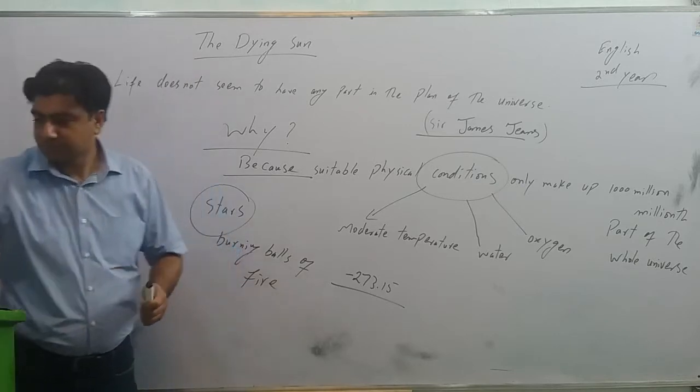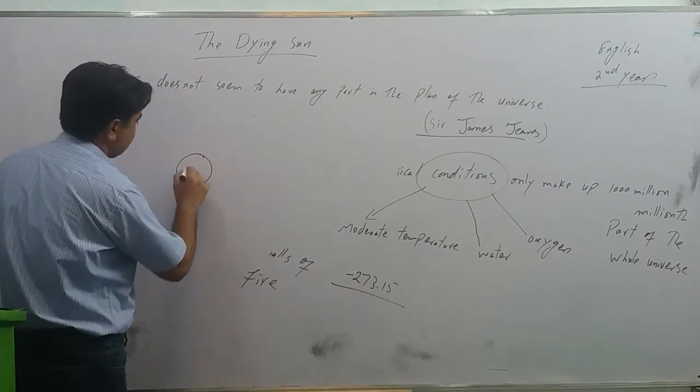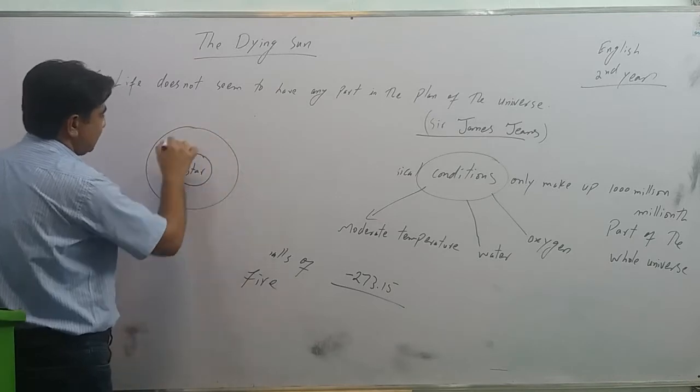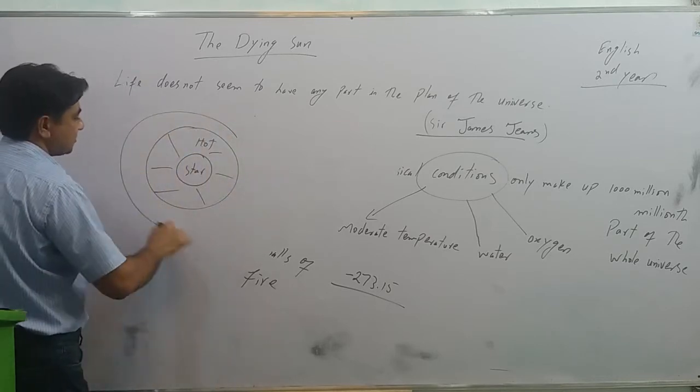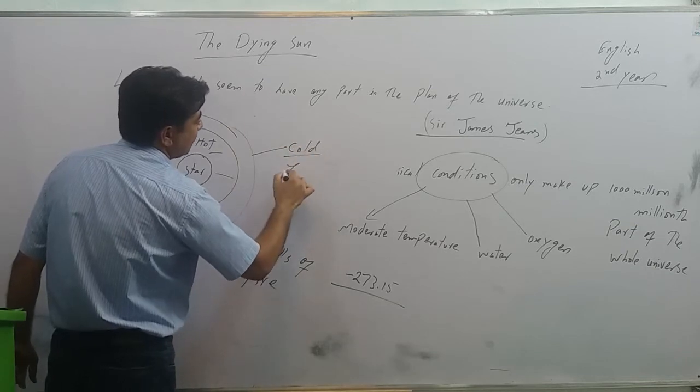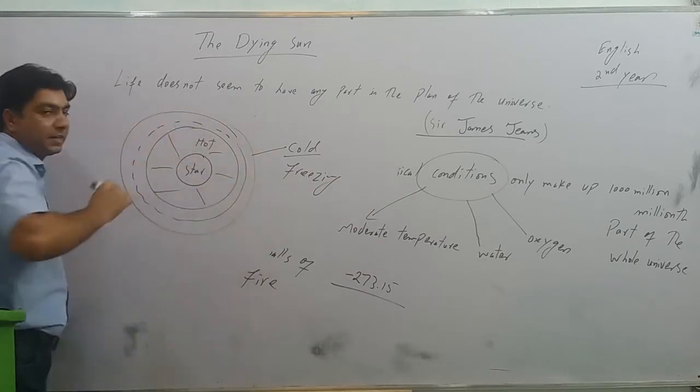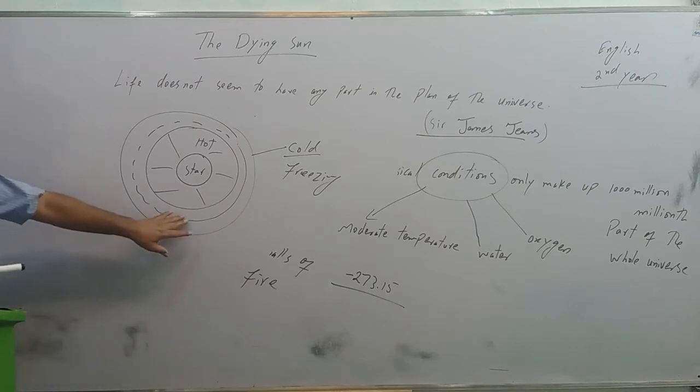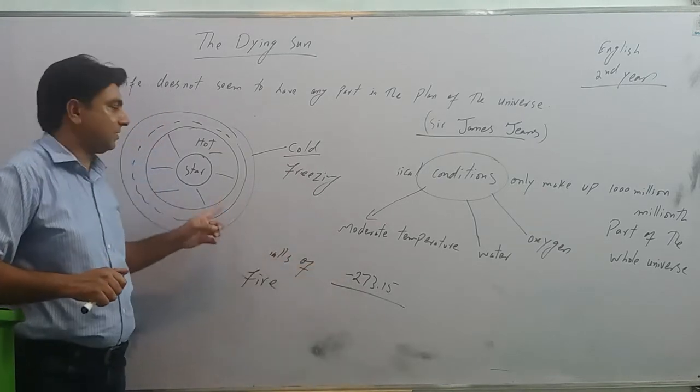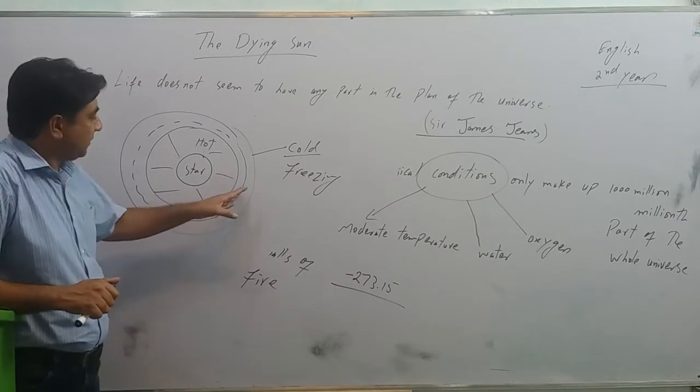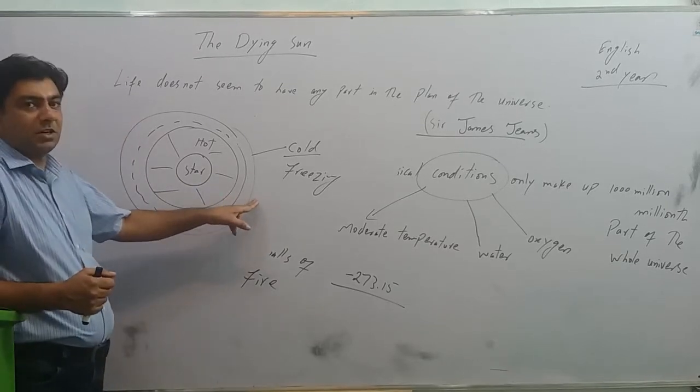If there is a star in the universe, suppose this is a star, around it this much area would be extremely hot. Away from this star is extremely cold, freezing. He says this is only the temperature belt where the temperature would be moderate. It would be neither too hot nor too cold. Liquid should remain liquid. Solid should remain solid. If it is closer to the star, all the liquid would boil. And if it is away from the stars, all the liquid would be frozen.